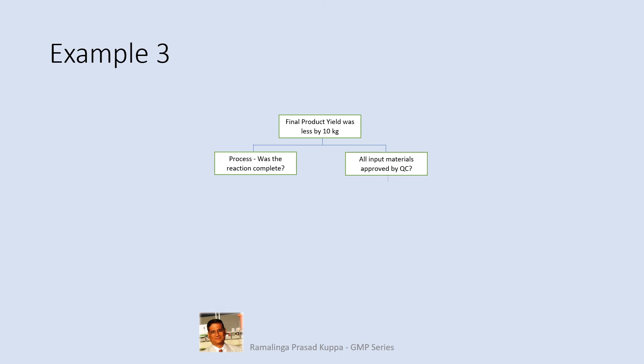If the inputs were approved by QC, go to the next stage and check the status of material charges — were they as per the BPR? If yes, go to the process review. If reaction completion is established by in-process test, go to the next stage. It is established that the reaction was complete and there was no possibility of loss of yield at this stage — possible loss may be in the next level of investigation. Was there any physical loss of material? If yes, go down further.